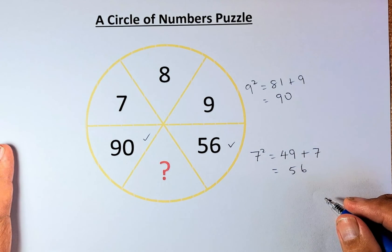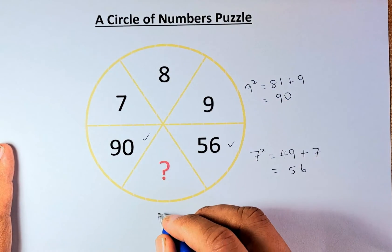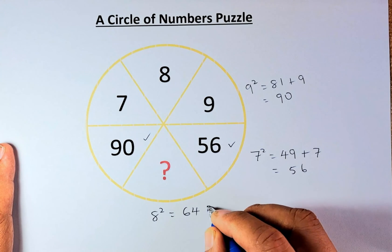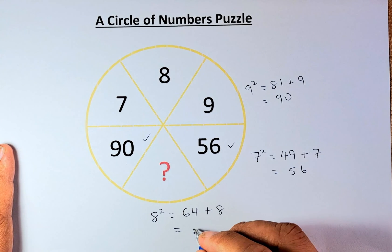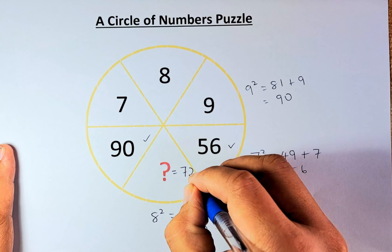So last but not least, we are going to solve what is 8 squared. So here, our solution is going to be 8 squared, which is going to be 64, and then we're going to add the number 8 itself. So 64 plus 8, the answer is going to be 72. So the question mark is 72.